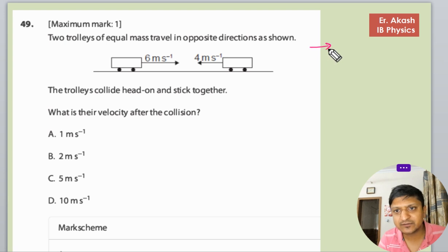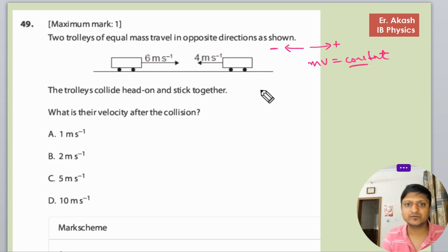So first take that this direction is positive and along the left side it is negative, and the momentum is mV equals to constant. So we will use this.